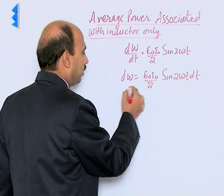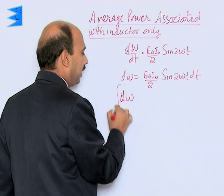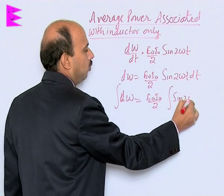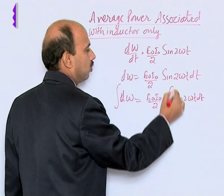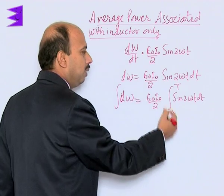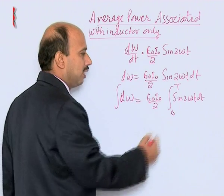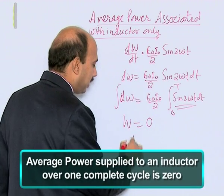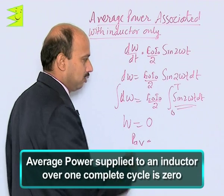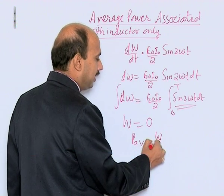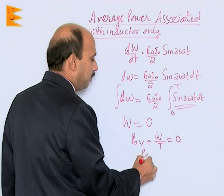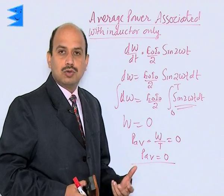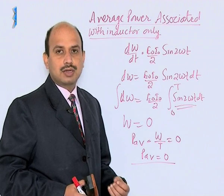When we integrate to calculate total work done in one cycle, we get W equal to E naught I naught by 2 times the integral of sin 2 omega t dt from 0 to T. When you integrate it, the total work done is 0, because the average value of sin 2 omega t is 0. So W is equal to 0, and average power consumed P average is also 0 — that is W by T equals 0. Therefore, there is no power consumption in the case of a pure inductor circuit.